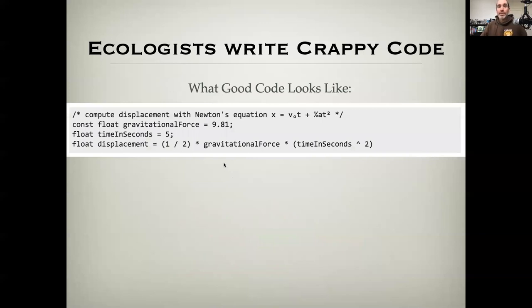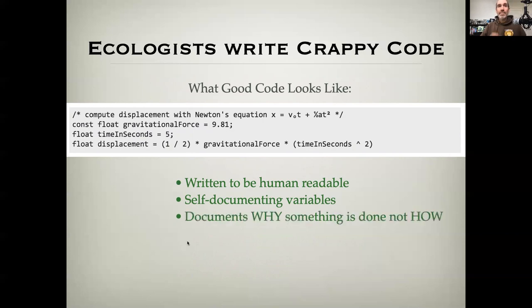Here's a better example of what good code would look like. This is code that is written to be human readable. The variable names are self-documenting. I don't need to say g equals 9.81 and then put a comment that says gravitational force. A hundred lines later, you won't remember what g stands for.